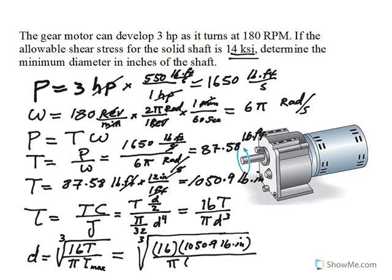So pi and tau max is 14,000 psi. 14 KSI is 14,000 psi. Psi is pound per inch squared. So you see how pound and pound cancel. We end up getting inch cubed. Inch cubed comes out of the cube root as inches. So we get 0.726 inches.